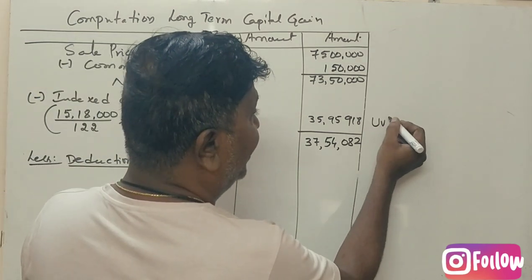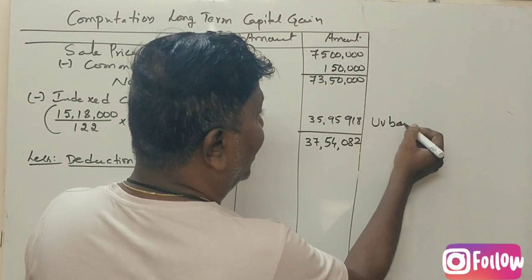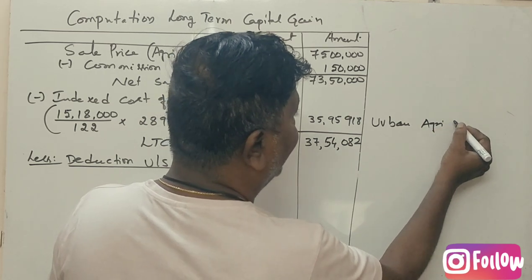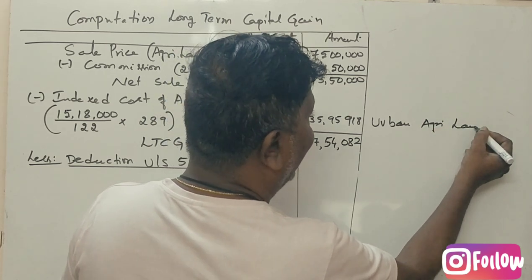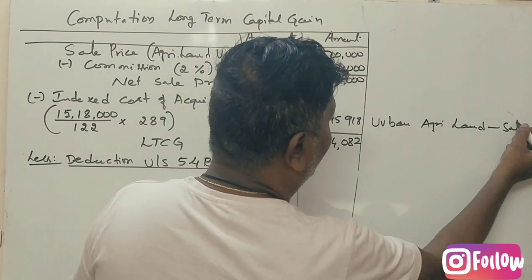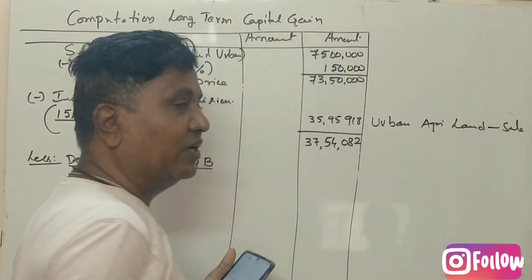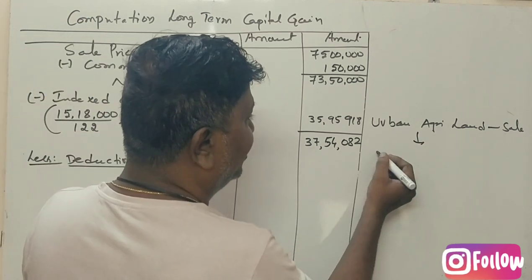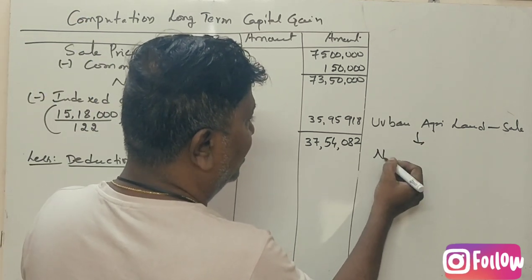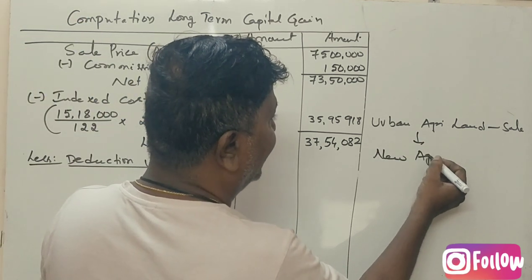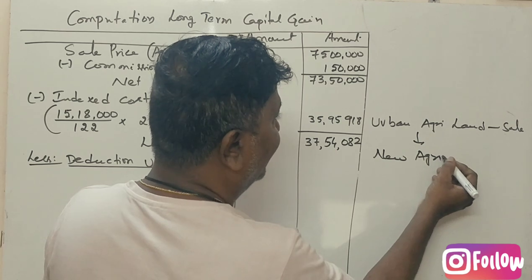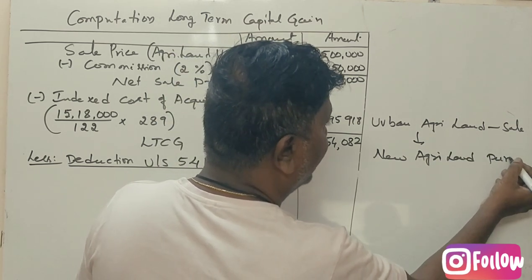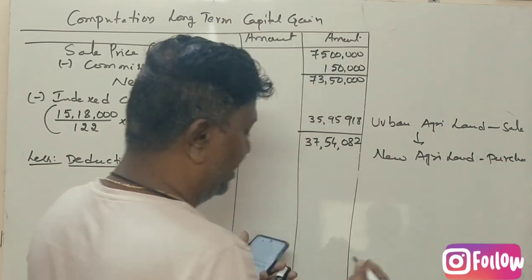You have to write: Urban Agricultural Land — Sale. And then, New Agricultural Land — Purchase. You can see this direction.